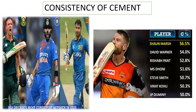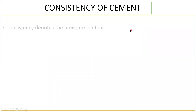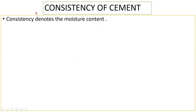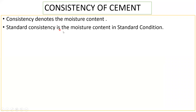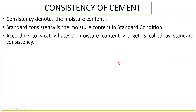Just as consistency in cricket is expressed as a percentage, when we test cement we also need a certain percentage. So in civil engineering, consistency denotes the moisture content. Standard consistency is the moisture content measured under standard conditions. A scientist called Vicat stated that whatever moisture content we get at a standard temperature and standard condition is called standard consistency.